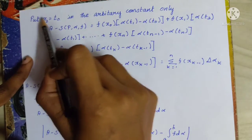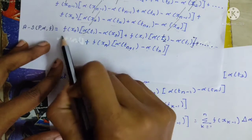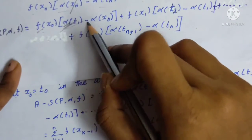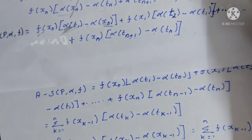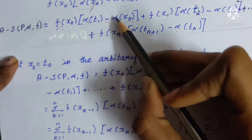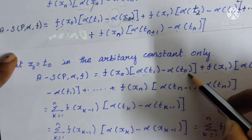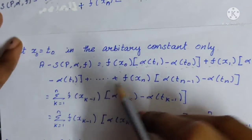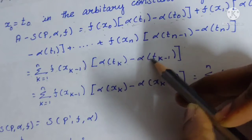The remaining terms after cancellation: put x_0 equal to t_0 as an arbitrary constant. The function alpha gives alpha(t_1) minus alpha(x_n), which is alpha(t_0). So we get f(x_0) times [alpha(t_1) minus alpha(t_0)], then f(x_1) times [alpha(t_2) minus alpha(t_1)], up to f(x_{k-1}) times [alpha(t_k) minus alpha(t_{k-1})].